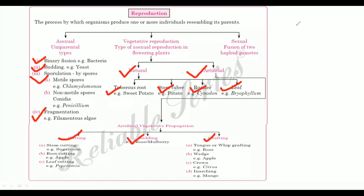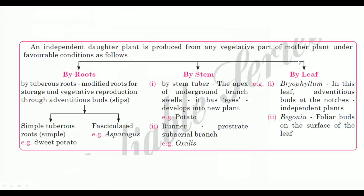These are in the mind maps. They produce independent daughter plants from any vegetative parts of the mother plant under favorable conditions. When they are independent daughter plants, they are producing any vegetative parts, developed by roots, by stem and by leaf.